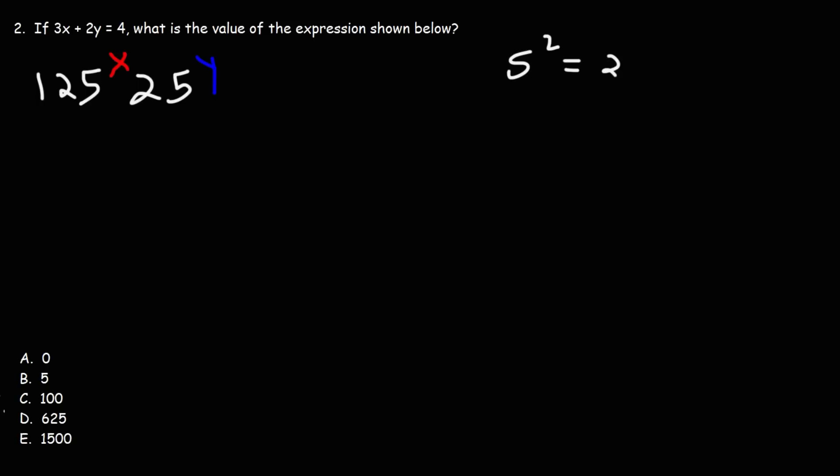5 squared, or 5 times 5, is 25. And 5 to the 3rd power, or 5 times 5 times 5, is 125. So I'm going to replace 125 with 5 cubed. And I'm going to replace 25 with 5 squared.